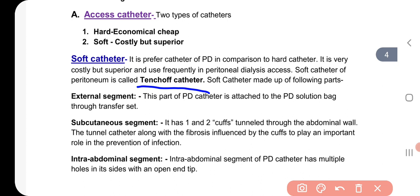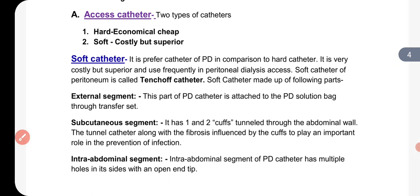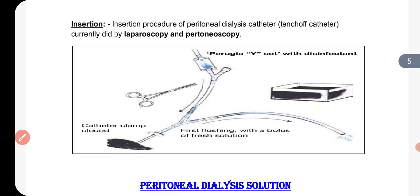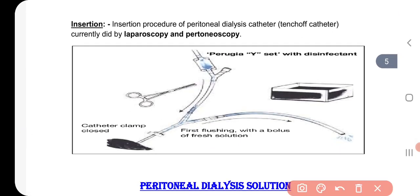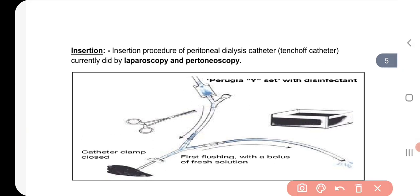This catheter is made in three parts. The first part is the external segment. The second part is the subcutaneous segment. And the third part is the intra-abdominal segment. When you open the video, you will see a structure of the peritoneal dialysis catheter.